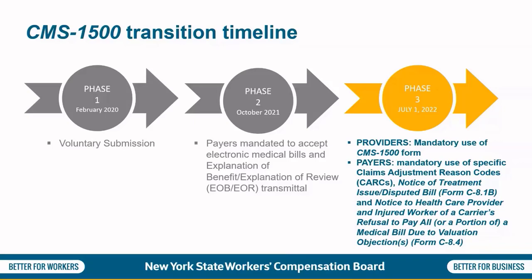Providers must also prominently report the injured worker's temporary impairment percentage, work status, and causal relationship of the injury at the top of the CMS 1500 form medical narrative. Payers are required to use the new Notice of Treatment Issue Disputed Bill Form C-8-1-B, and Notice to Health Care Provider and Injured Worker of the Carrier's Refusal to Pay All or a Portion of a Medical Bill due to Valuation Objections, Form C-8.4, with applicable Claims Adjustment Reason Codes, or CARCs, to object to medical bills.